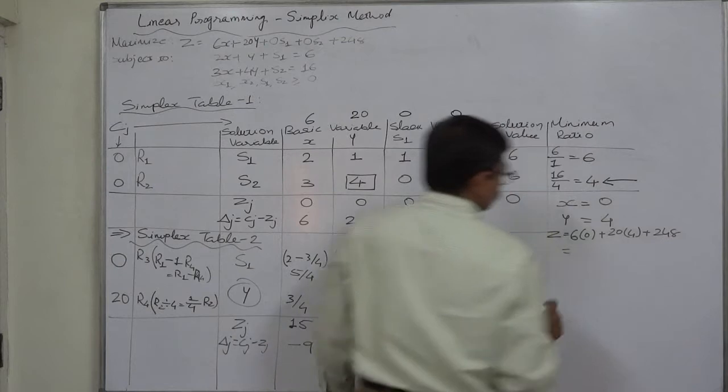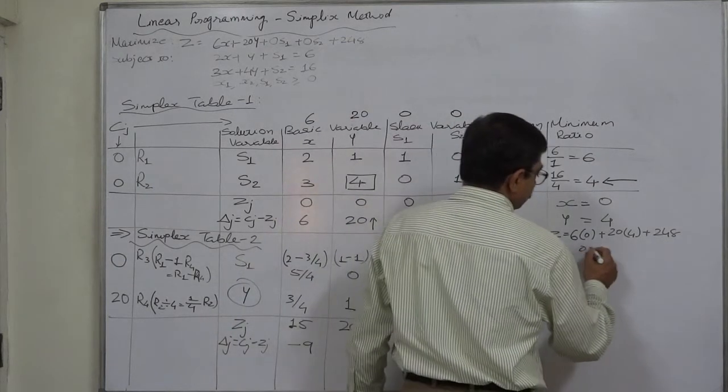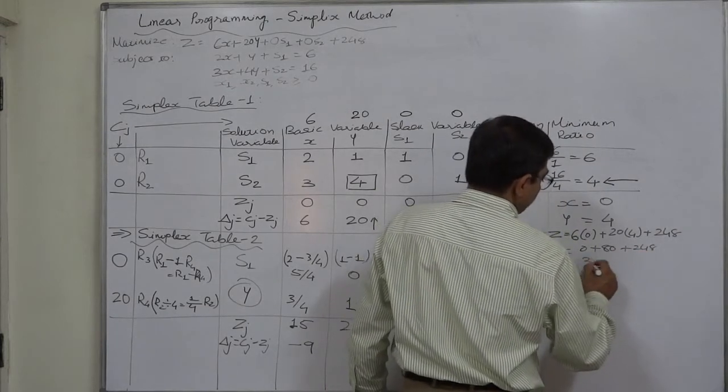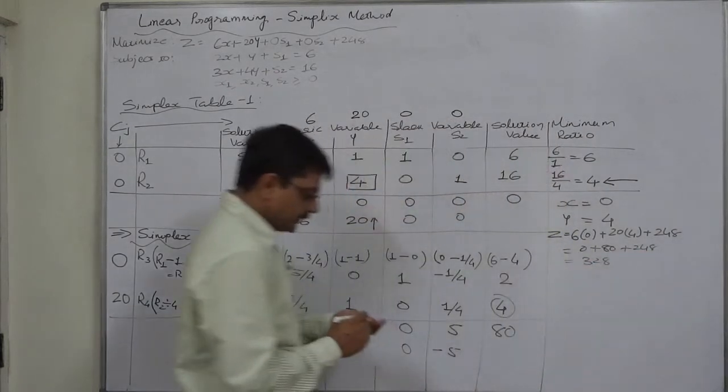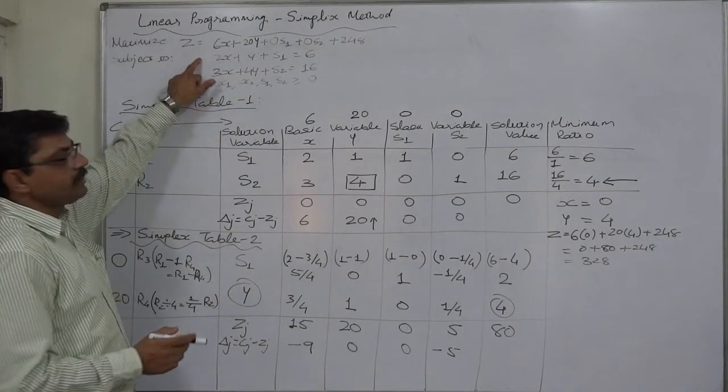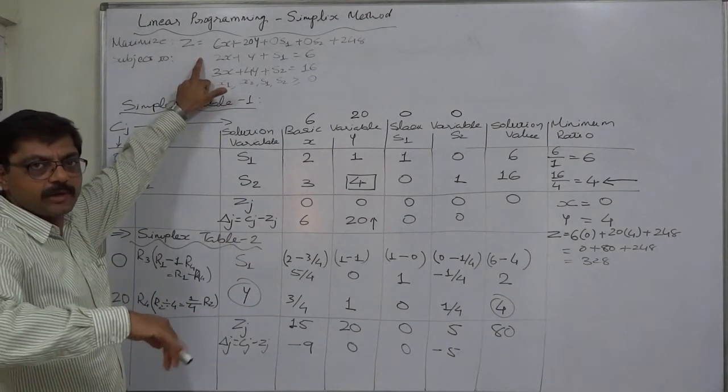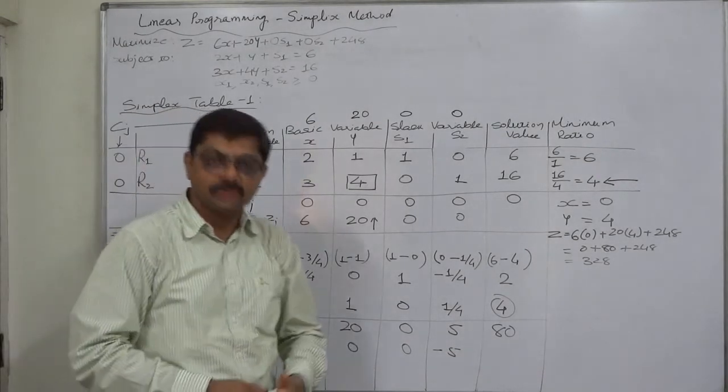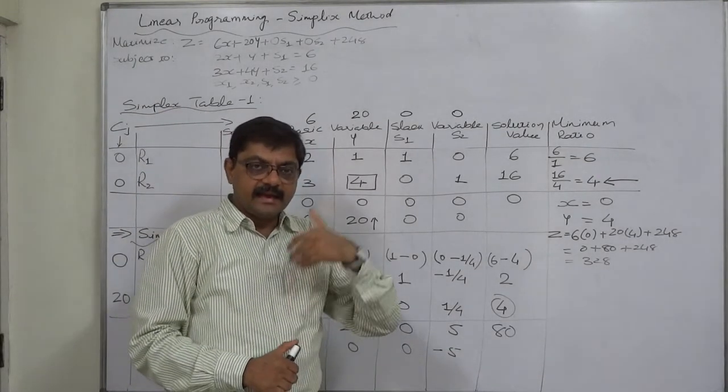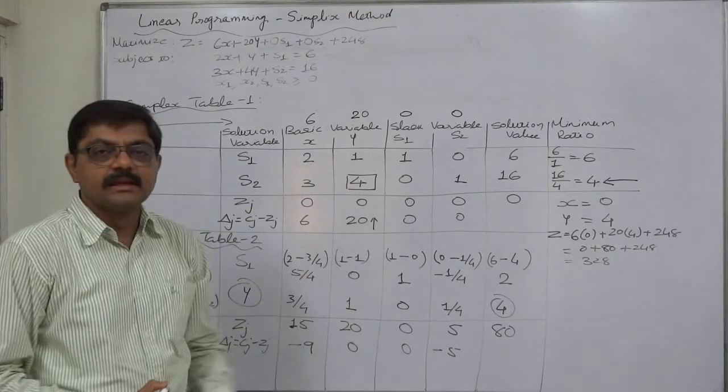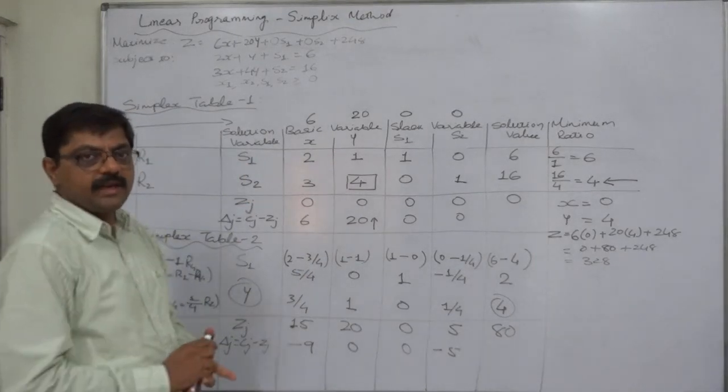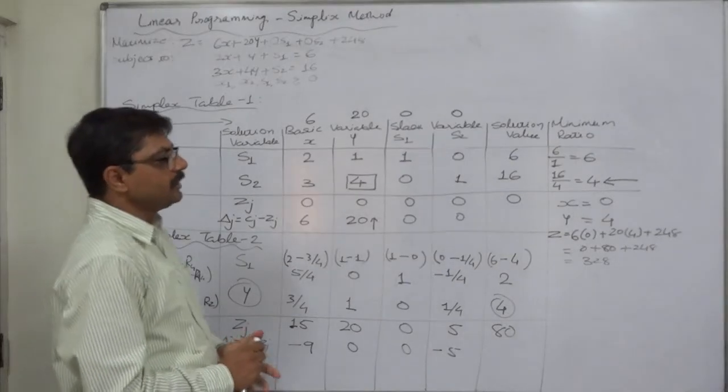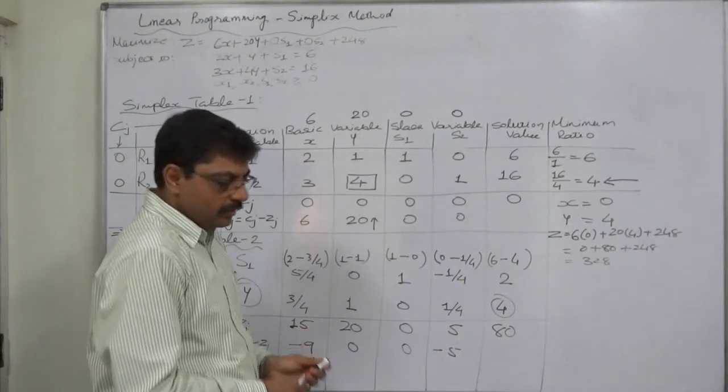But we know that this one is not our original problem. This is our revised problem. The original problem was with two variables x1 and x2, and at their place we substituted x1 equals 8 plus x, and x2 equals 10 plus y. So it is necessary to find the solution of the original variables x1 and x2.